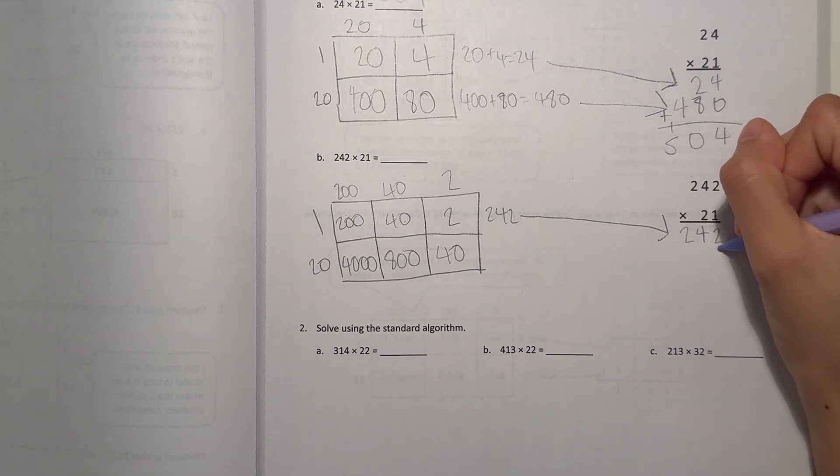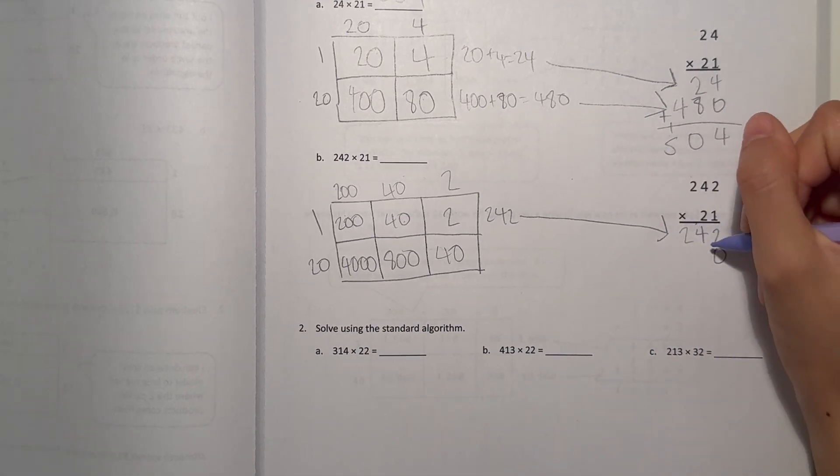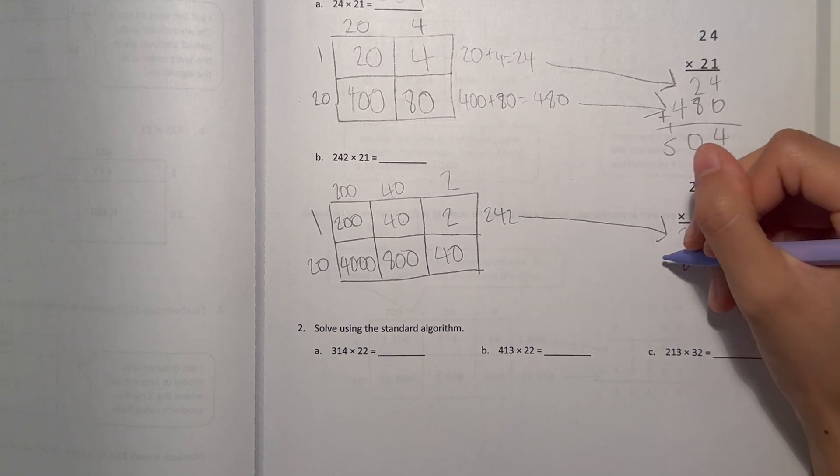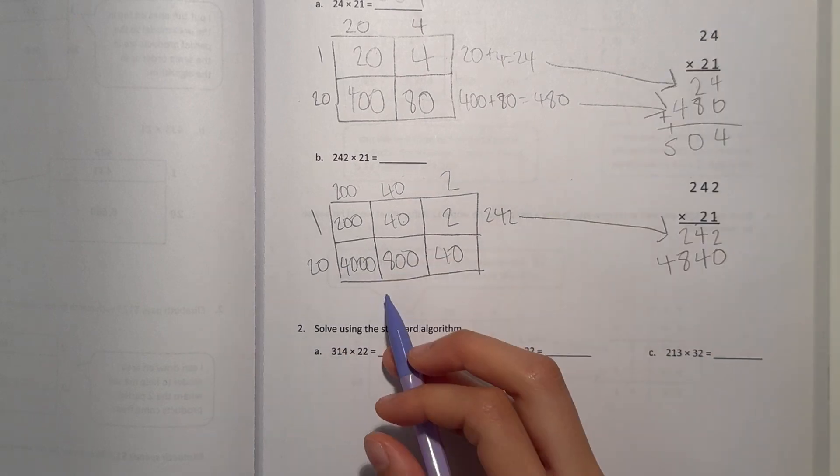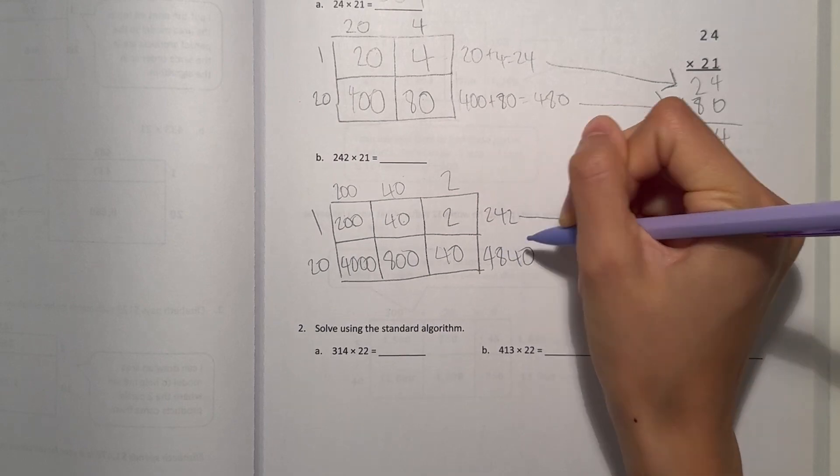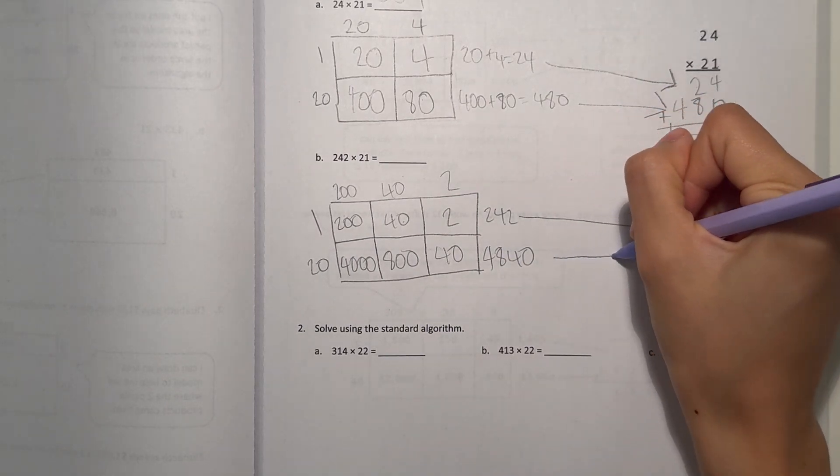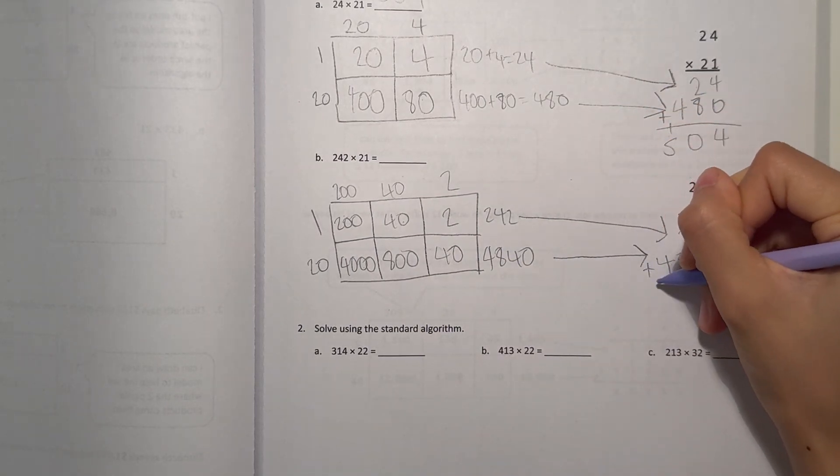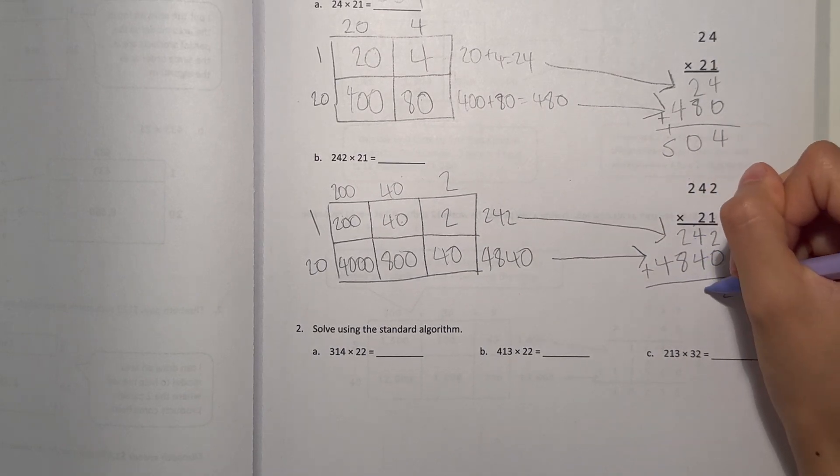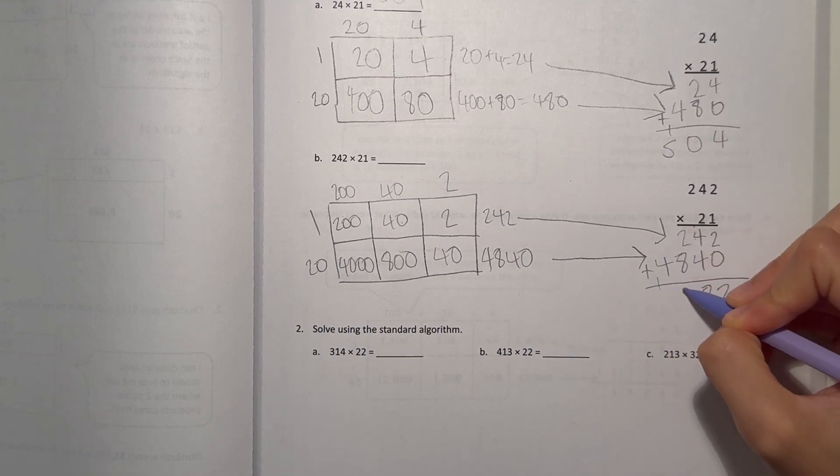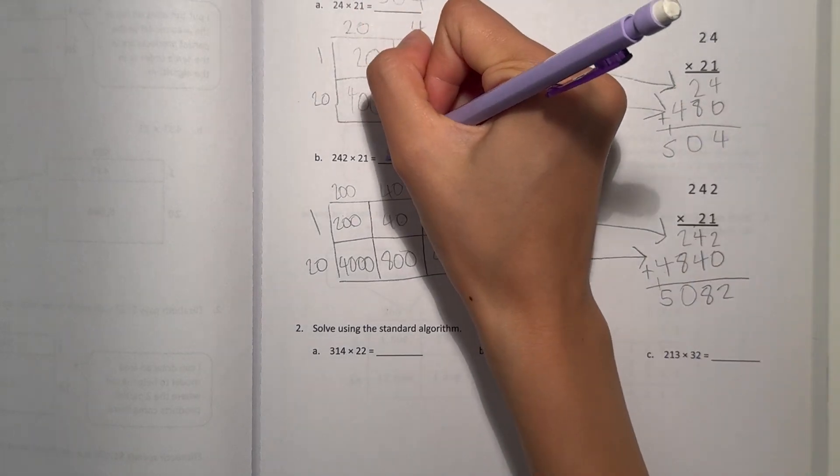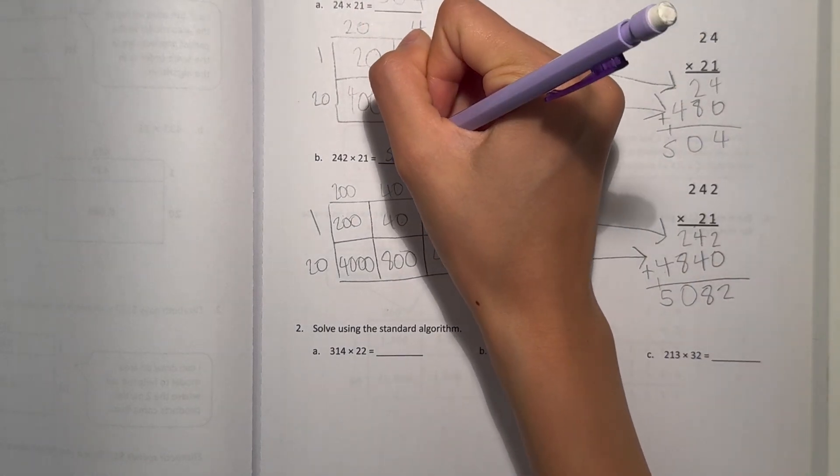Now let's look at our second row. Add a 0. 2 times 2 is 4. 4 times 2 is 8. And 2 times 2 is 4. So we add these numbers up together. We have 4,840. So let's add our total. 2 plus 0 is 2. 4 plus 4 is 8. 2 plus 8 is 10. And 4 plus 1 is 5. 5,082.